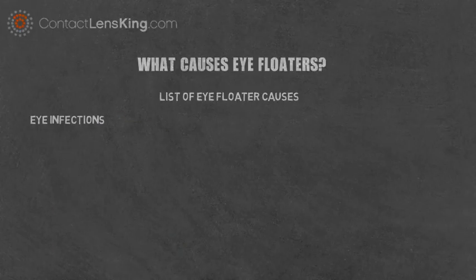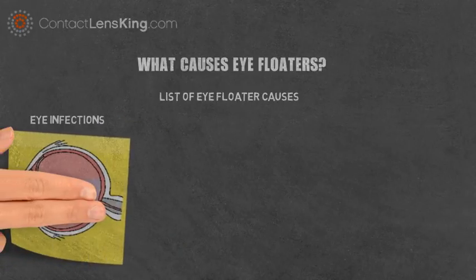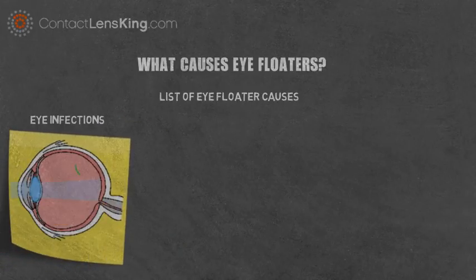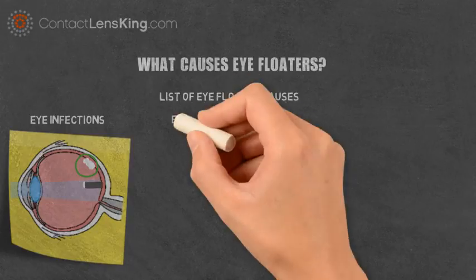Eye infections. Infections and inflammation can cause the internal layers of the eye to experience premature shedding of cells. Once these cells shed, they float aimlessly until flushed out by the eye's normal drainage network.